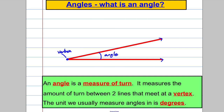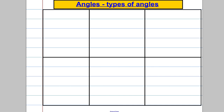We usually measure angles in degrees. So we might say this is, for example, 35 degrees. The symbol we use is a little raised 'O' — so we write 35° — which saves us from writing 'degrees' every time. That's how we would write it. So that's what an angle is, and now we'll look at the specific types of angles you need to know, along with their names and degree values.